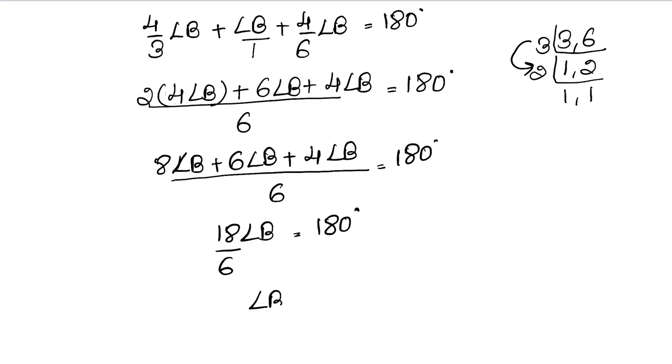Now the angle B still appears. Cross multiply it. So it means angle B equals 180 into 6 upon 18. How much is our angle B? 10 into 6, that is 60 degree.